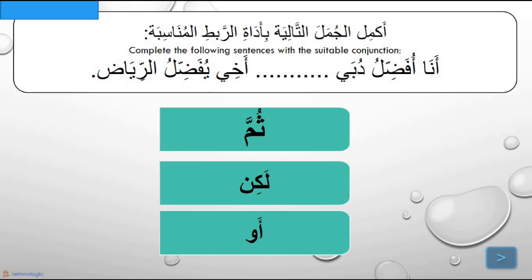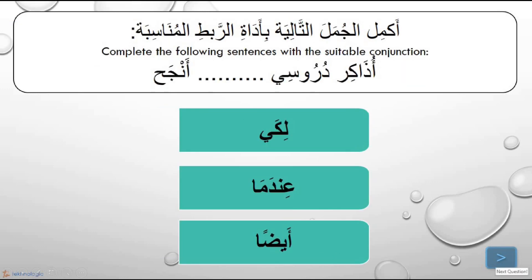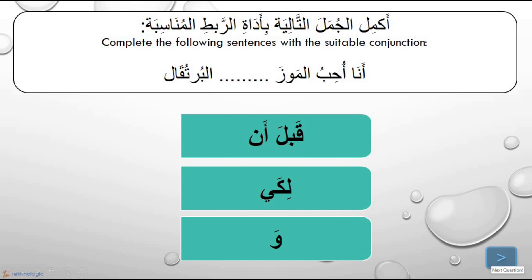Exercise: أَكْمِلِ الْجُمَلَ التَّالِيَةَ بِأَدَوَاتِ الرَّبْطِ الْمُنَاسِبَةِ — Complete the following sentences with the appropriate conjunctions. (1) أَنَا أُفَضِّلُ دُبَيَّ ___ أَخِي يُفَضِّلُ الرِّيَاضَ. (2) أُذَاكِرُ دُرُوسِي ___ أَنْجَحَ. (3) أَنَا أُحِبُّ الْمَوْزَ ___ الْبُرْتُقَالَ.